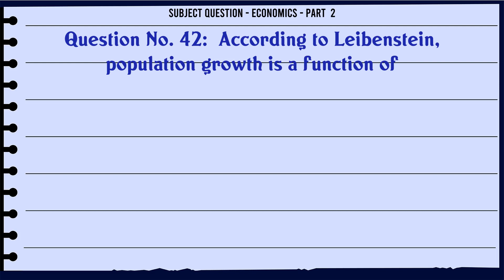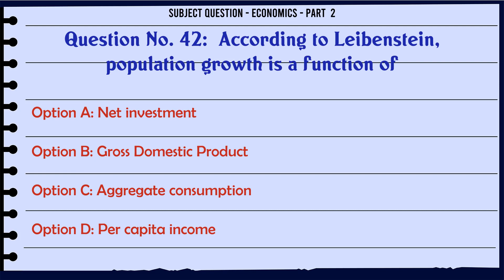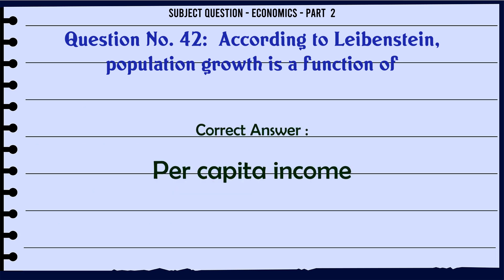According to Liebenstein, population growth is a function of: A. Net investment. B. Gross domestic product. C. Aggregate consumption. D. Per capita income. The correct answer is: Per capita income.